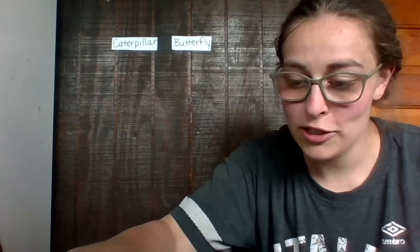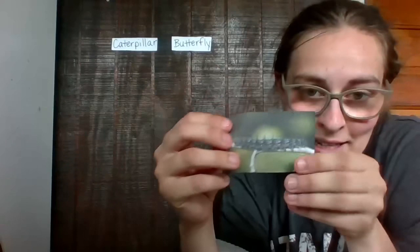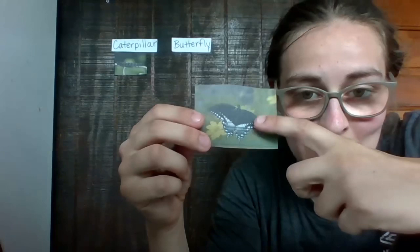Let's start with this one. This is a morning cloak. See, it's black and it's got some spikes on it. This caterpillar turns into this butterfly. It's definitely a darker butterfly and it's got some tails on the bottom. It's got some blue down here.